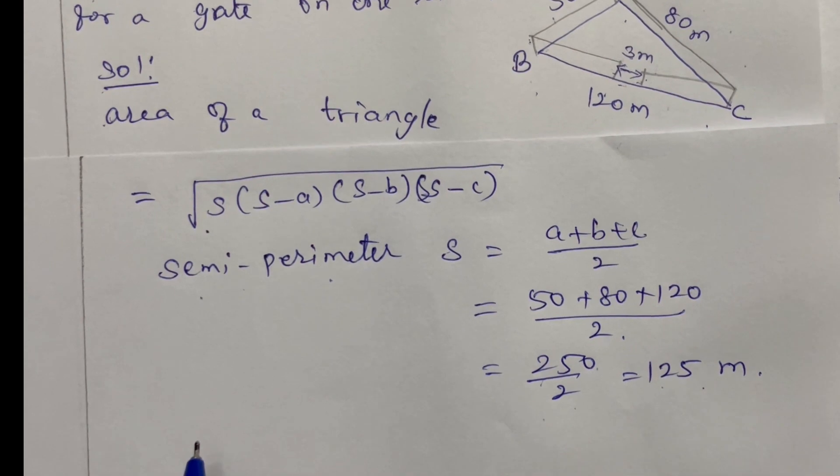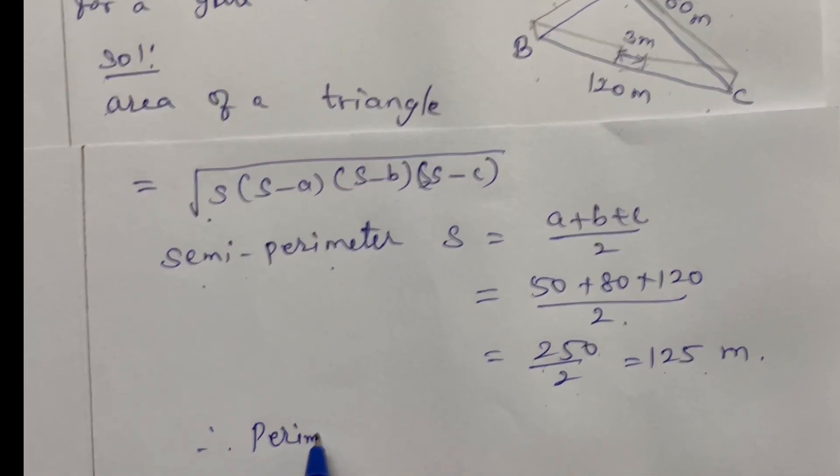Semi-perimeter is 125. Therefore, perimeter is 250.